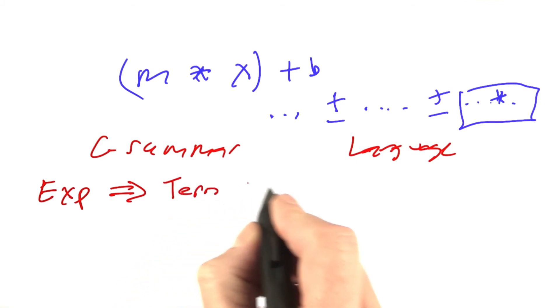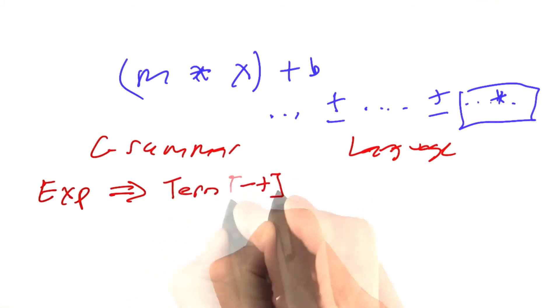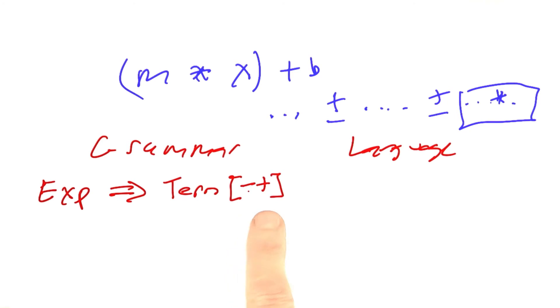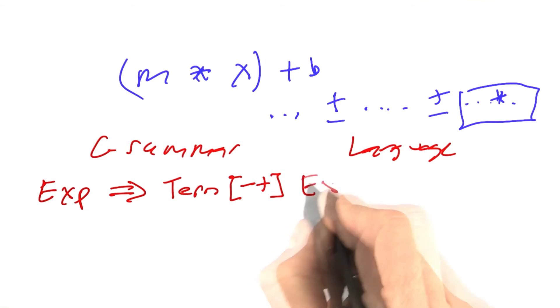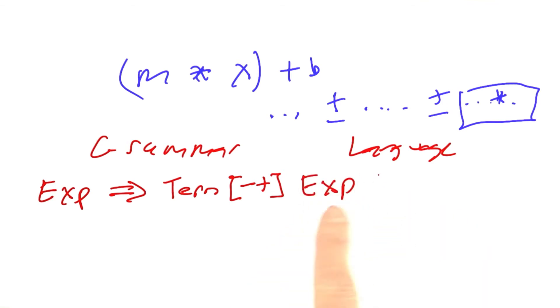An expression can be a term, a minus or a plus. Let's use a regular expression notation to describe a plus or minus. Then more terms, but I can just say recursively that that's an expression. That will give me any number of terms with plus and minuses in between them. That's one possibility.